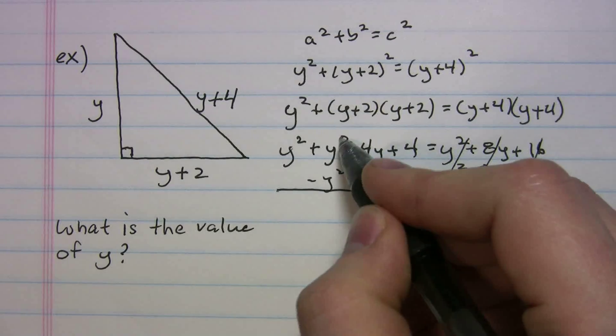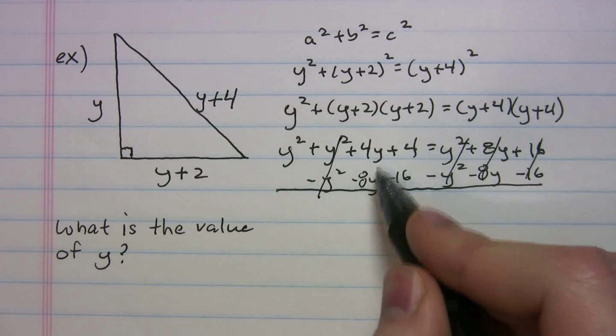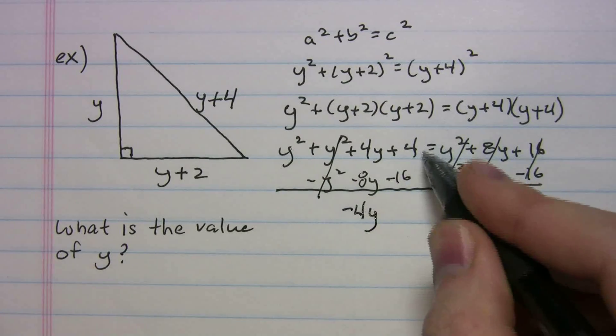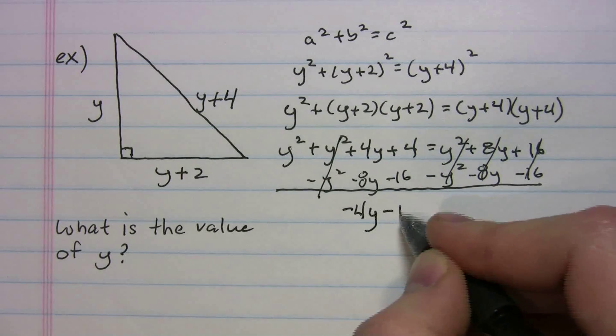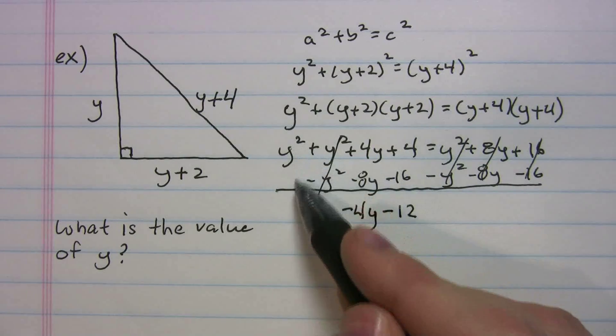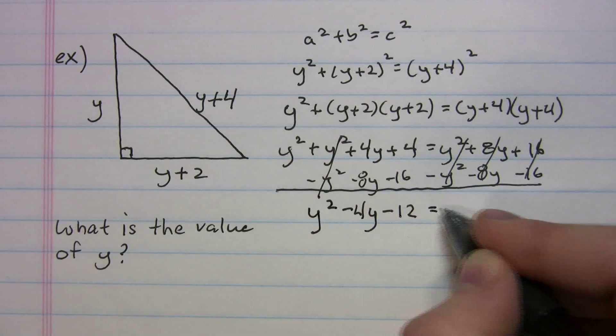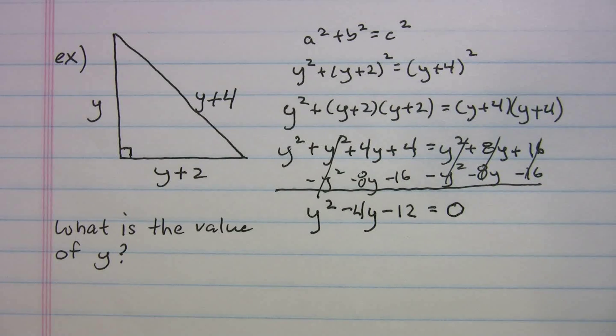y squared minus y squared crosses out. 4y minus 8y minus 4y. 4 minus 16 minus 12. And we've got this y squared from before. So I'll bring it down. And that whole thing equals 0. Okay.